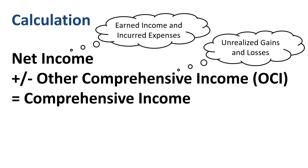Comprehensive income is easy to grasp once you understand the calculation. Net income plus or minus other comprehensive income equals comprehensive income. Net income represents earned income and incurred expenses. Other comprehensive income represents unrealized gains and losses that have an effect on balance sheet amounts, including the equity account, but bypass the income statement.